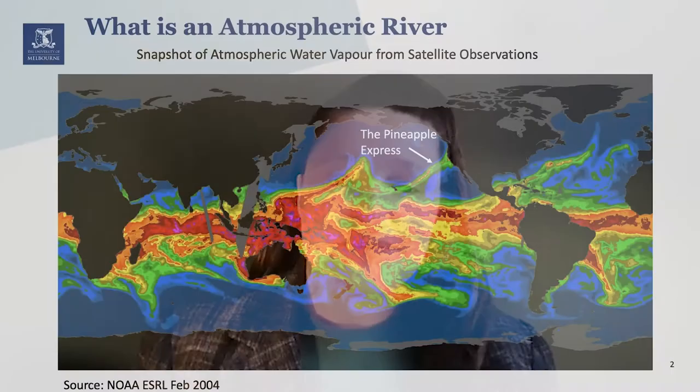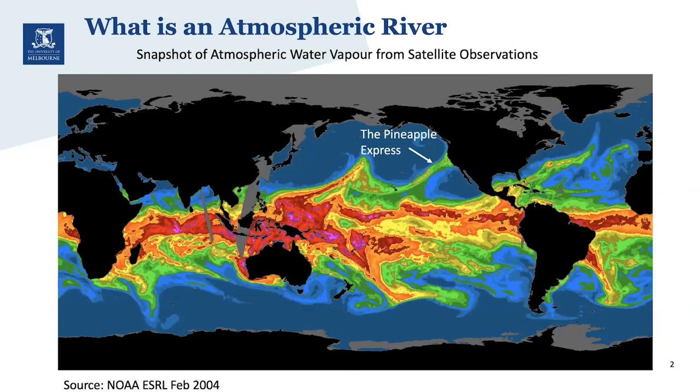Atmospheric rivers provide important rainfall for drought-stricken regions like California, but they can also lead to heavy flooding, landslides, and damaging winds. There's one atmospheric river that even has its own name called the Pineapple Express, and that's because it serves as a highway for moisture travelling from tropical Hawaii to the west coast of the USA.